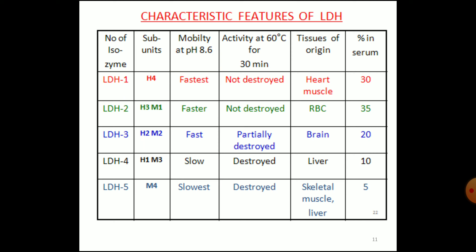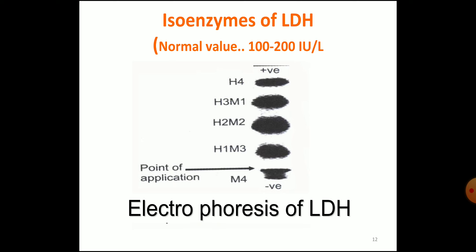LDH3 is H2M2, fast moving, partially destroyed by heat, produced from brain, constituting 20%. LDH4 is H1M3, slow moving in electrophoresis, heat labile — destroyed by heat — produced from liver, constituting 10%. LDH5 is M4, slowest moving, heat labile, produced from skeletal muscles and liver, constituting only 5% of the total. Here in the picture of electrophoresis, the fastest moving is H4 and the slowest is M4.